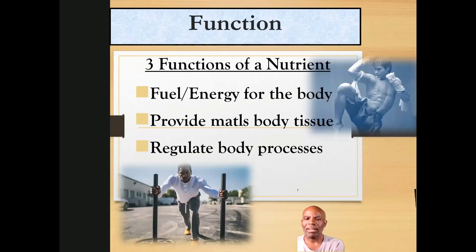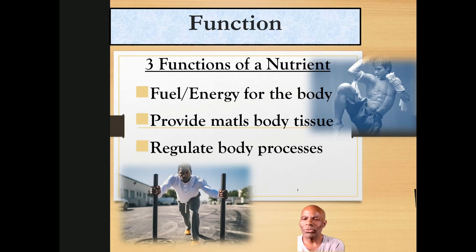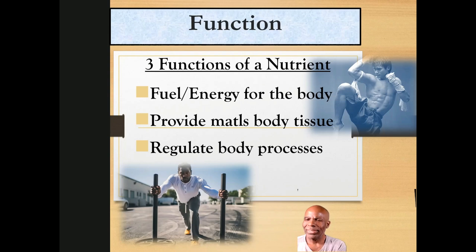The three functions of a nutrient: first, to give fuel or energy for the body. Second, it provides material for the upkeep of body tissues. Just about all of our organs are covered in body tissue. The blood is covered in body tissue, and all of those things need nutrients in order to function.